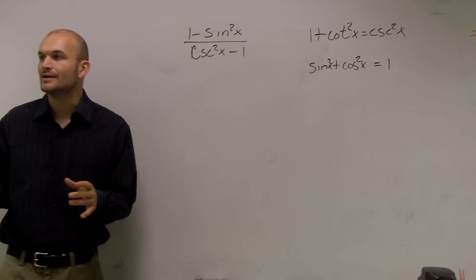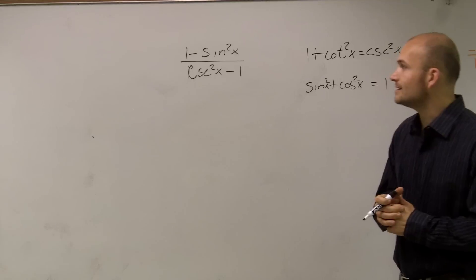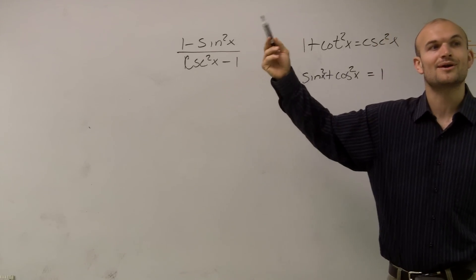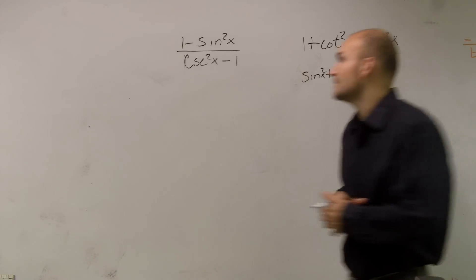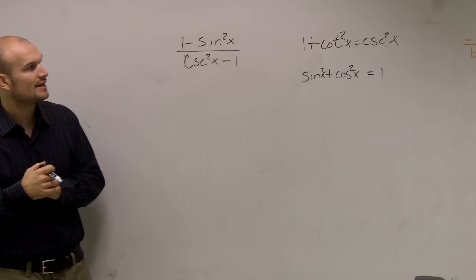I mean, we could kind of work on separating out our fraction, but really when I automatically see squares, I automatically want to look at my Pythagorean identities. So I wrote those two down that are going to deal with sine squared and cosecant squared.